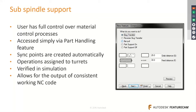In FeatureCAM you get bar-hardening options like follow support bar, pull, path catcher, cutoff, and eject, along with soft spindle support. It is very simple to generate these features, and using this functionality you can make your programming and machining much faster.